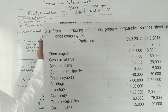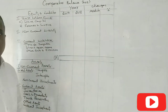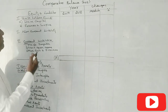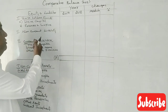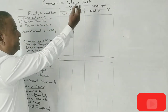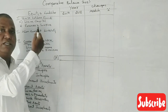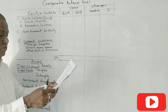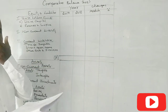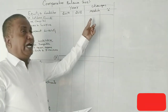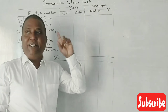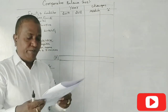First, prepare the comparative balance sheet. The columns are: Particulars, year columns for 2017 and 2018, then absolute change and percentage change.